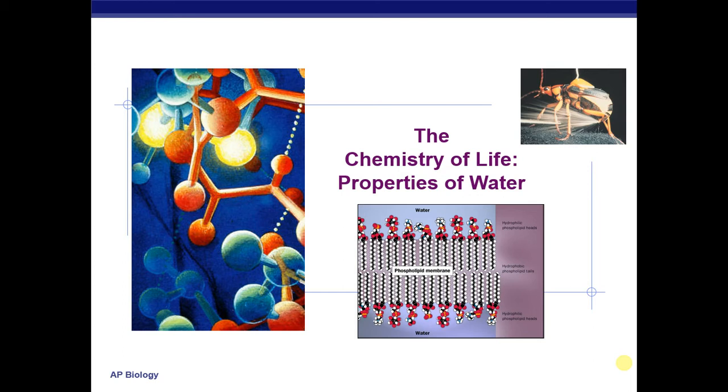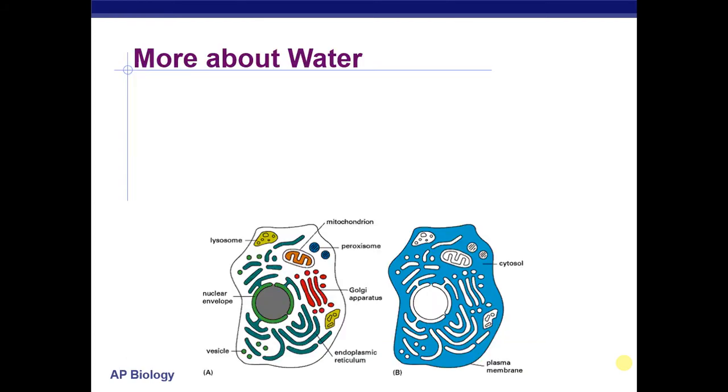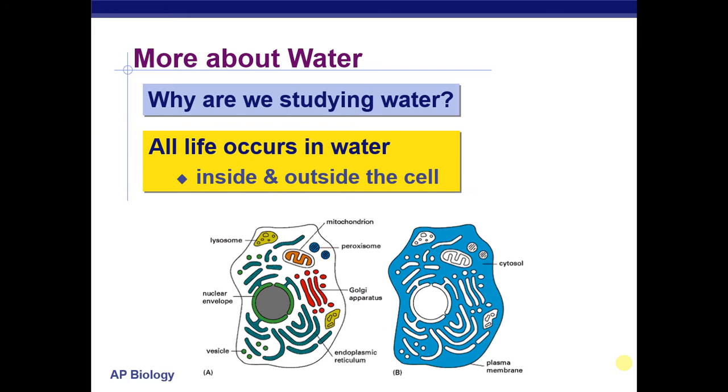polar bonds and hydrogen bonding because those were important to set up what we're talking about today, which is the properties of water. So why are we going to study water the very first thing that we do in the chemistry of life? And it's because of this: all life needs water.